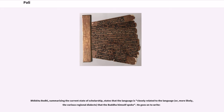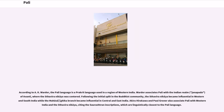Bhikkhu Bodhi, summarizing the current state of scholarship, states that the language is closely related to the language that the Buddha himself spoke. According to A.K. Warder, the Pali language is a Prakrit language used in a region of Western India. Warder associates Pali with the Indian realm of Avanti, where the Sthaviranikaya was centered. Following the initial split in the Buddhist community, the Sthaviranikaya became influential in Western and South India while the Mahasamghika branch became influential in Central and East India. Akira Hirakawa and Paul Groner also associate Pali with Western India, citing the Saurashtran inscriptions as linguistically closest to the Pali language.